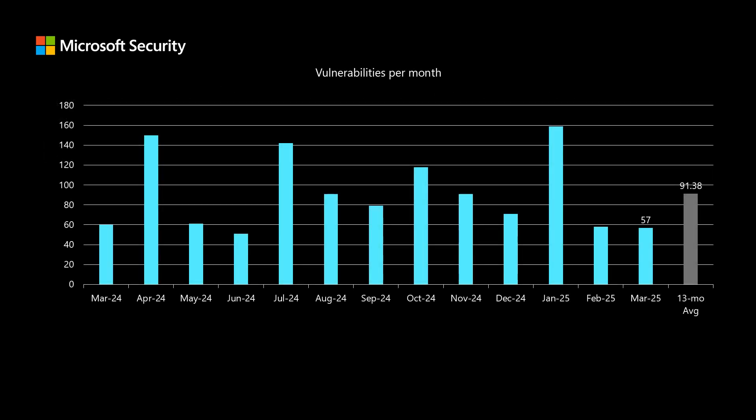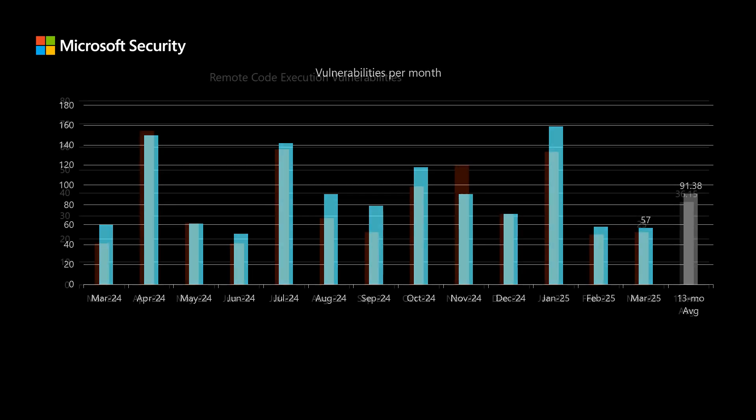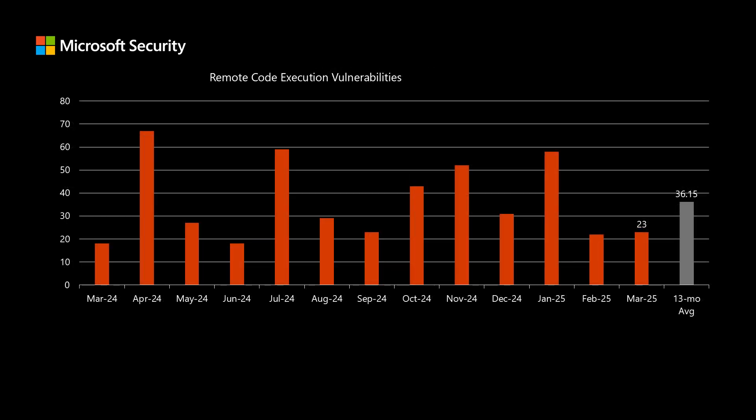Before I dig into today's release, I like to compare it to the previous 12 months to really get an understanding of how this release stacks up. We have 57 newly disclosed vulnerabilities in today's release, which is quite a bit lower than our average over the past 13 months of just over 91. For remote code execution vulnerabilities, there are 23 in today's release, also a little bit lower than the average of just over 36.